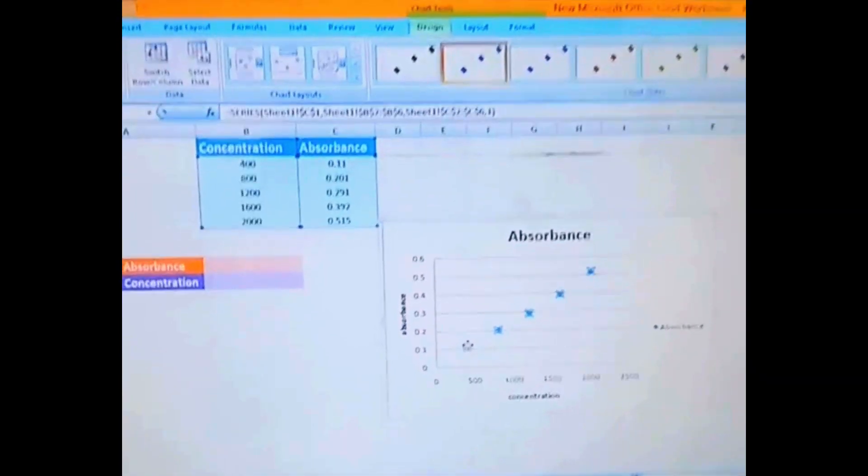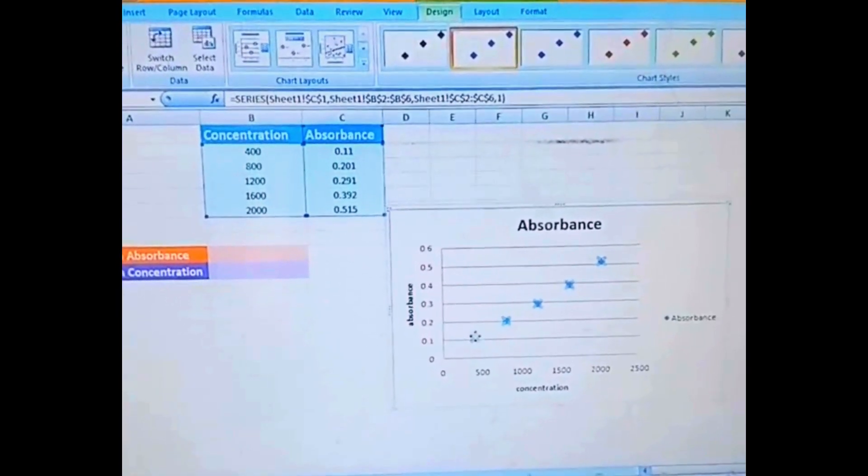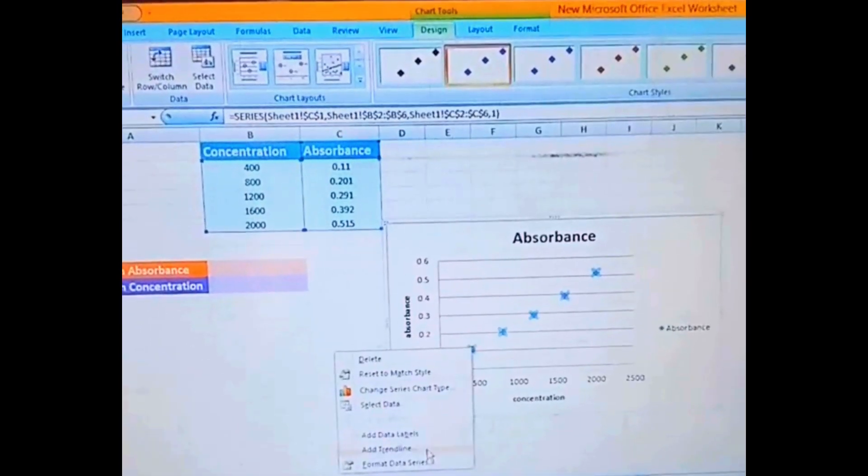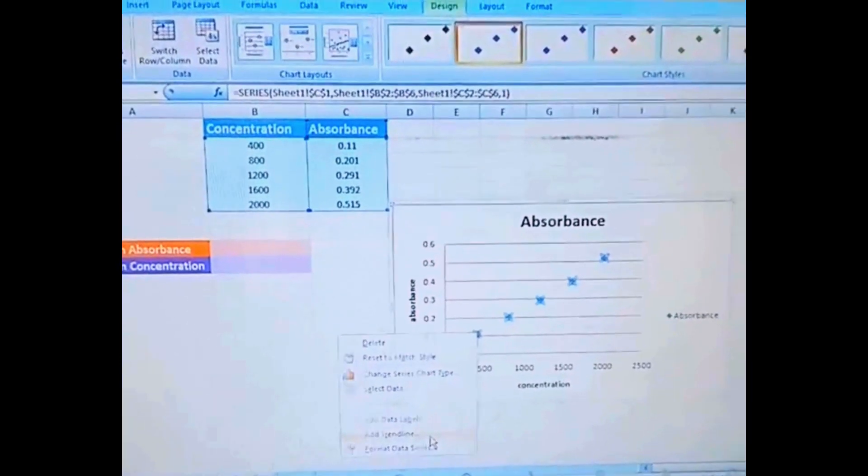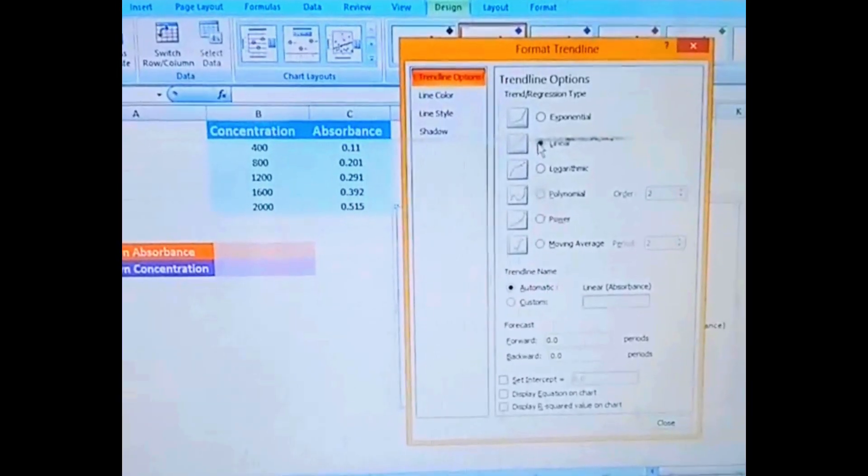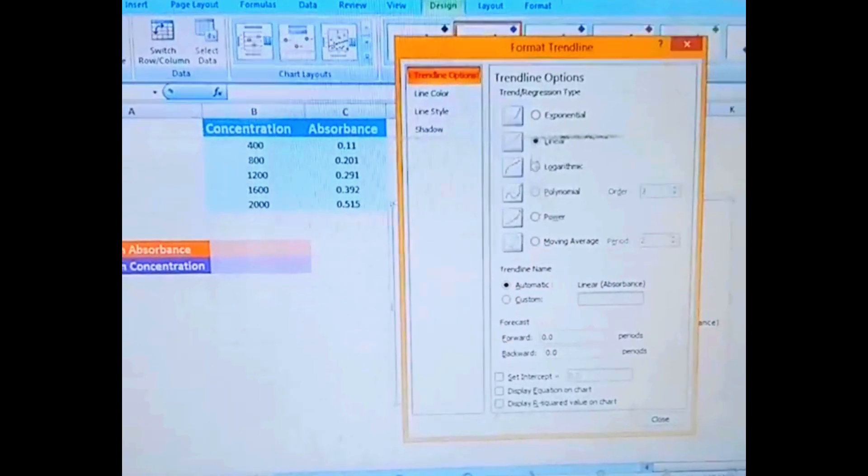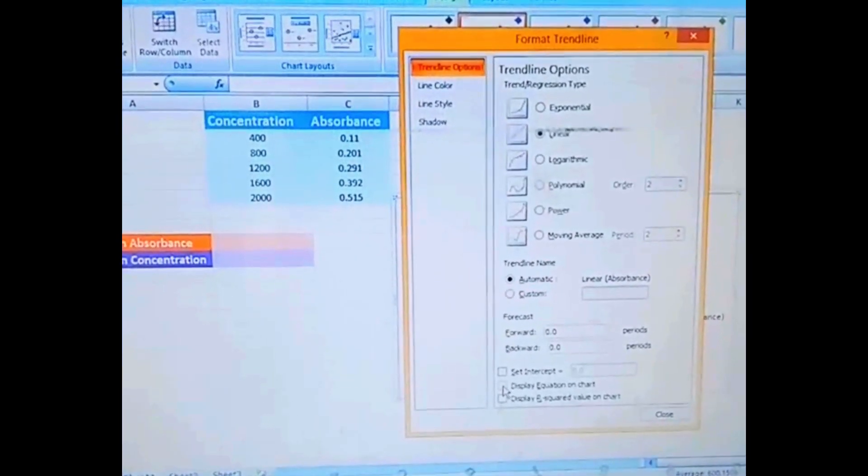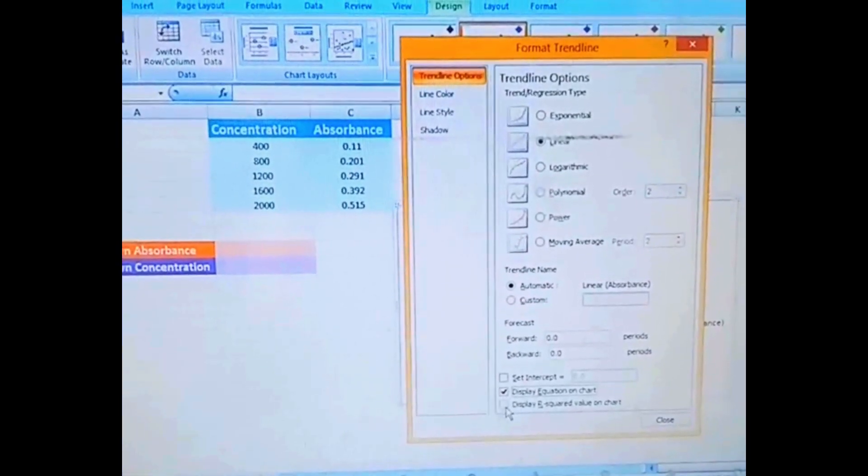Now I'm clicking on one of the dots and here we can see a trendline. Now here it should be linear and we are displaying the equation on the chart.